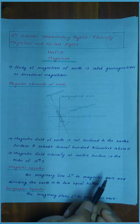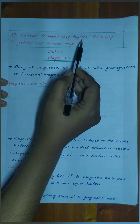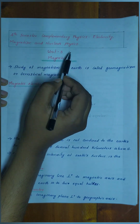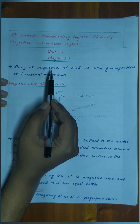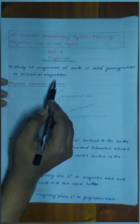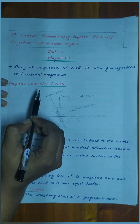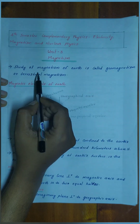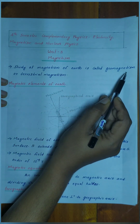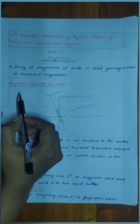Good morning to all. This is the 4th semester Complementary Physics paper covering Electricity, Magnetism, and Nuclear Physics. This is the 3rd unit: Magnetism. The study of the magnetism of the earth is called geomagnetism or terrestrial magnetism.